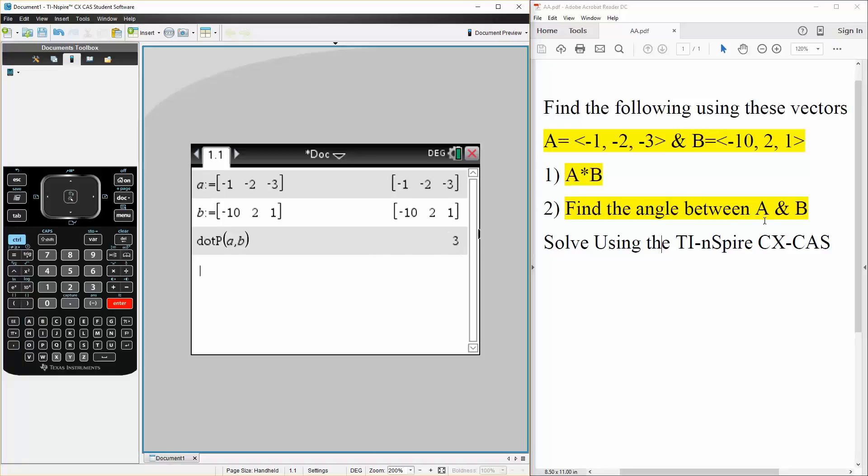We want to find the angle between A and B. So there's really no built-in command to do this, so we have to use what we know. In order to get the angle between A and B, it's the dot product divided by the magnitude of A times the magnitude of B, and we take the cosine inverse of it.